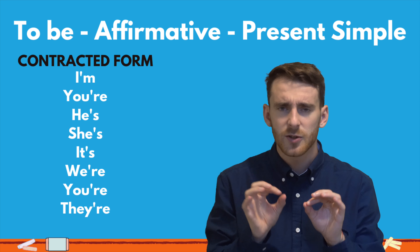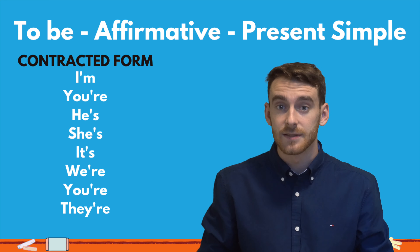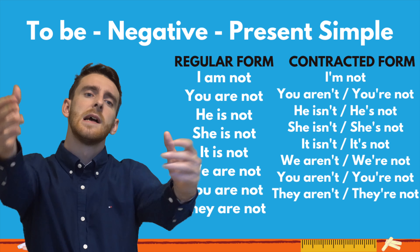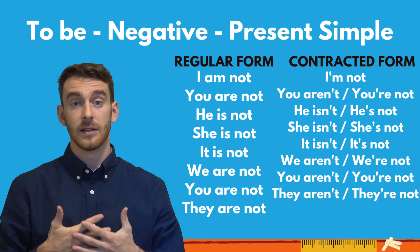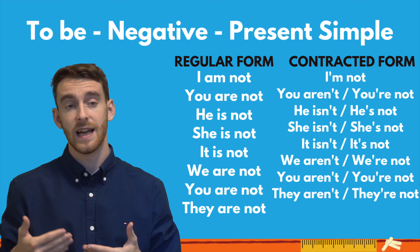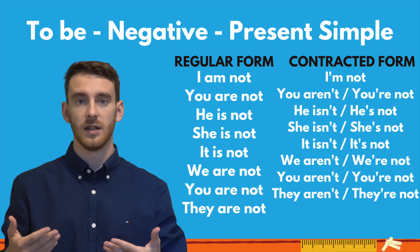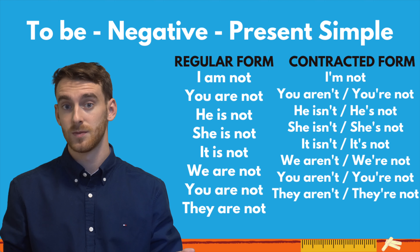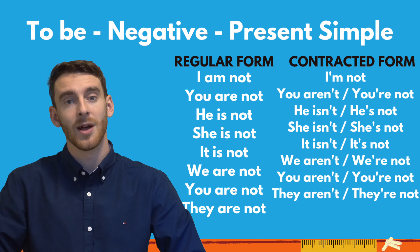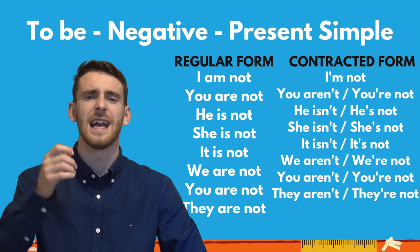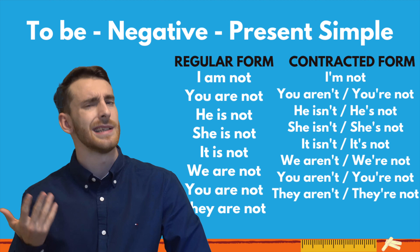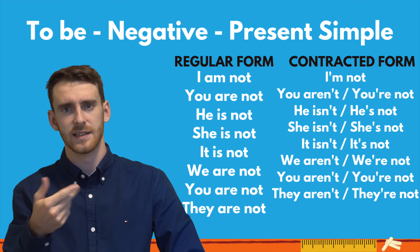So guys, there are some little tricks there you can use. Let's go to the negative. So here we also have the regular and contracted form. The structure is: subject, then the conjugation of 'to be,' then 'not.' So: I am not Spanish. I am not Spanish. Or you can say I'm not Spanish. You can contract it, and again, contracted is the more common form. Let's try that — regular, then contracted. Repeat after me.